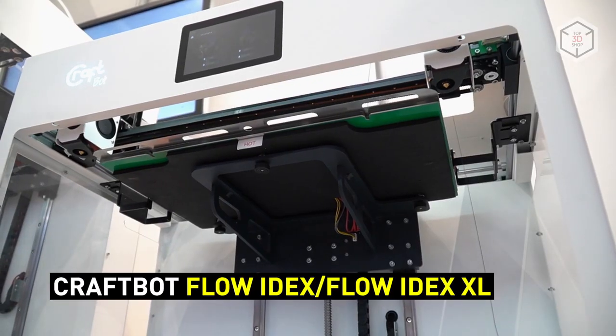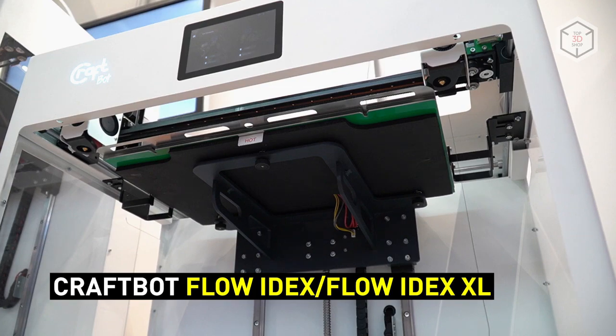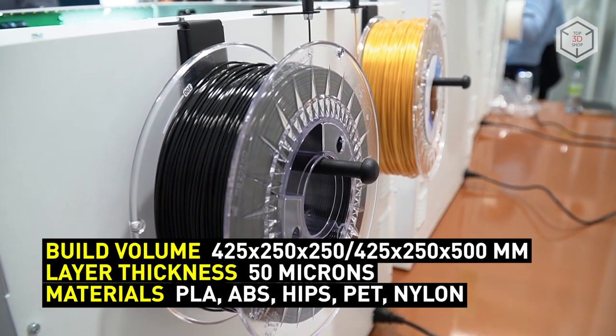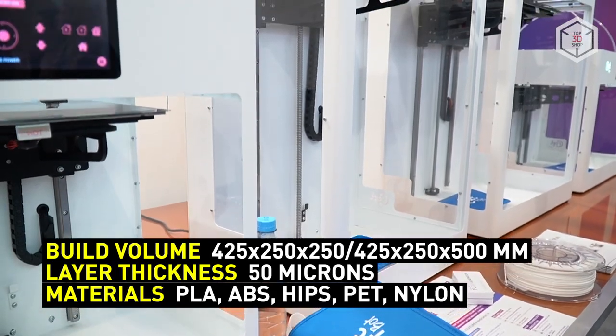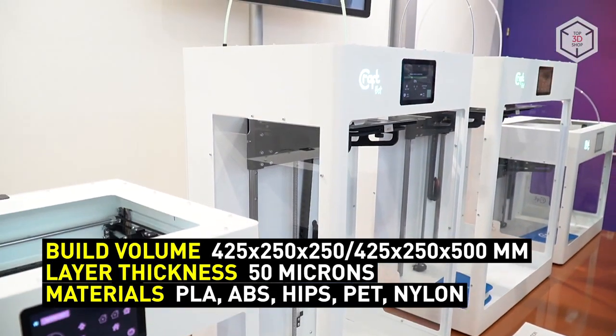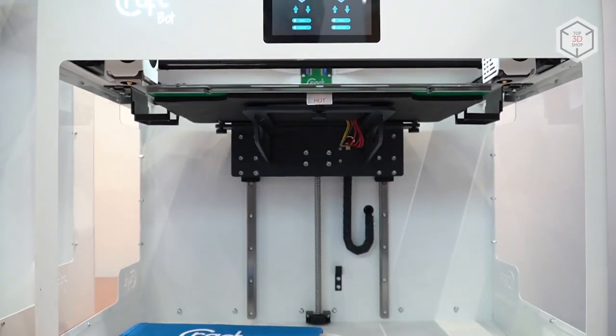The new printers feature a reinforced frame made of double steel sheet, which not only increases the stability of printing, but also simplifies transportation. All four devices include a heated bed with flexible Kapton sheets that allow to easily remove prints from the build platform.